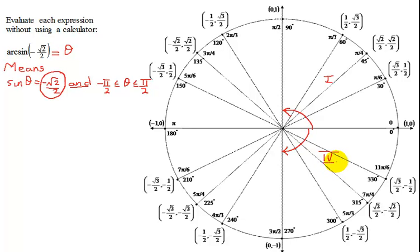So I need an angle in quadrant 4 and we need to look for the y values and find a y value that's equal to negative square root of 2 over 2. So that is what I'm looking for. So this is the angle I'm looking for.